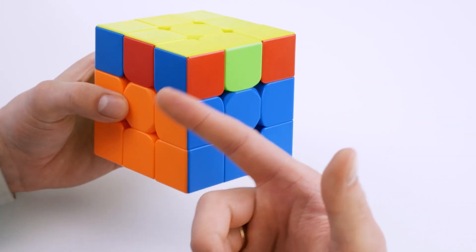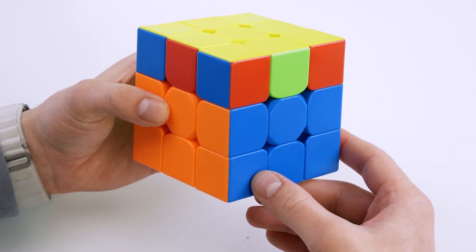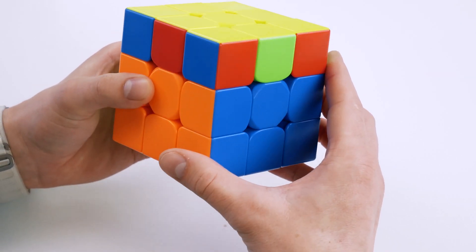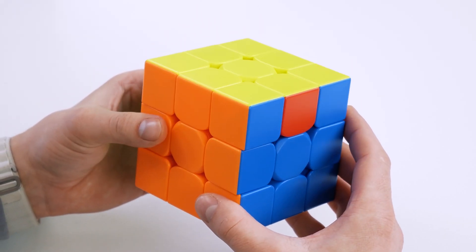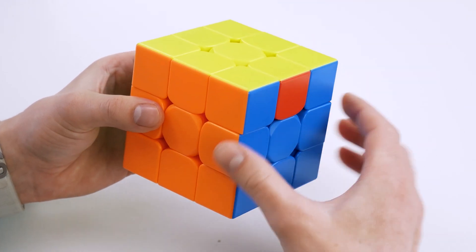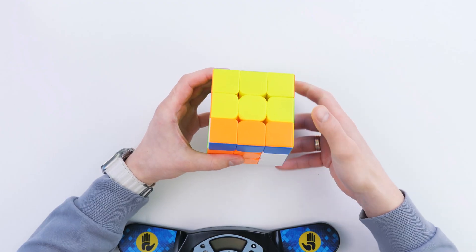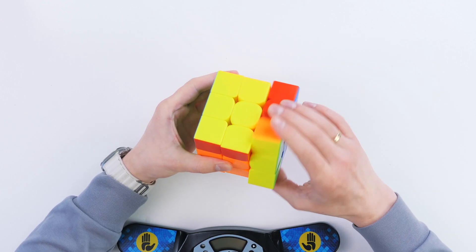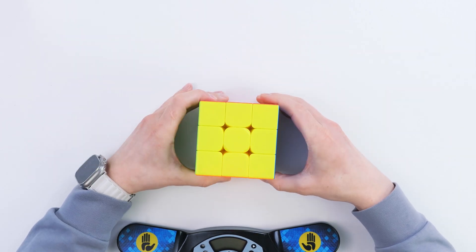And then he has U perm. I would make this U perm right from this position. But for some reason, he made this algorithm, turned the block towards himself and did this. That's it, the cube is solved, and he solved it in 4.41. Also an amazing result.